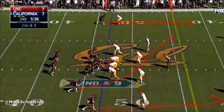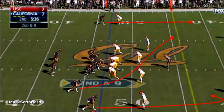USC has a 4-3 defense on the field and they'll show Goff cover two before the play. Both safeties are deep — you can't see them, but you can see their shadows to the right of the screen. There is a press corner to the top of the screen over that X receiver, which means that receiver needs to release to the outside on his vertical route. The other cornerback looks to be in off man or catch man technique, a few yards off the line of scrimmage. Both running backs on this play have pass protection responsibilities. Goff will fake a handoff at the mesh point, and both running backs will stay in to block.